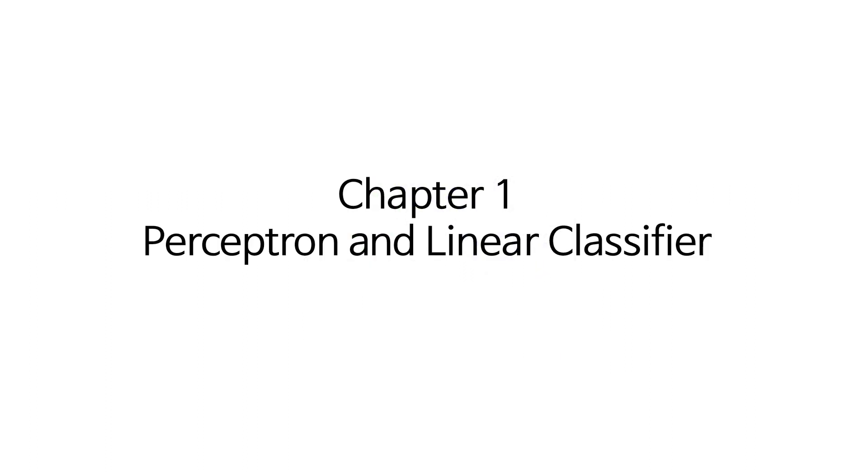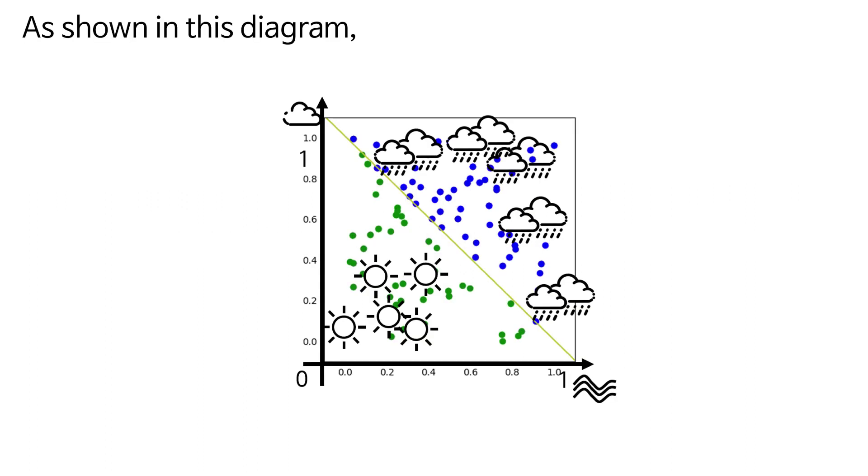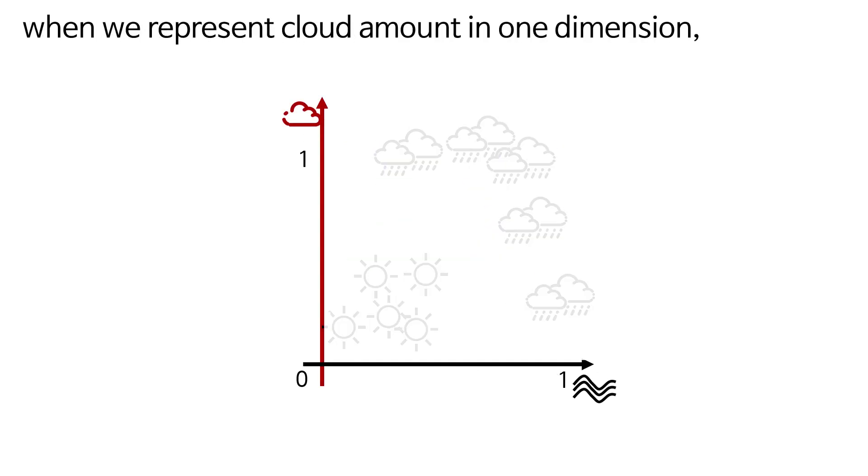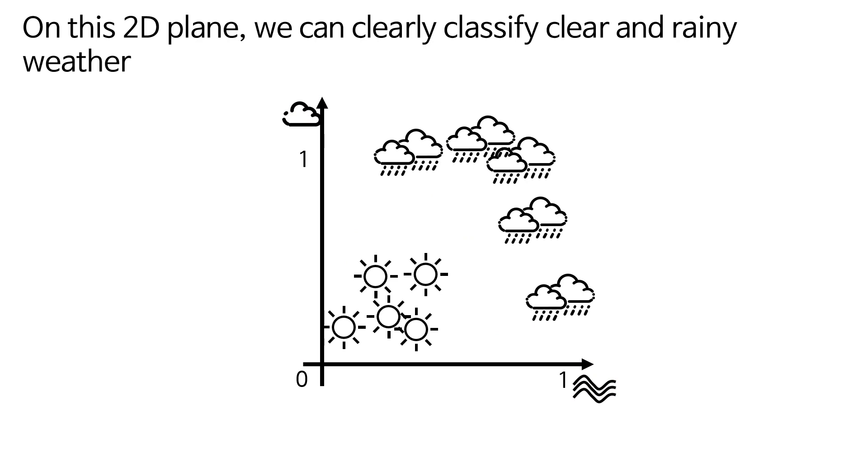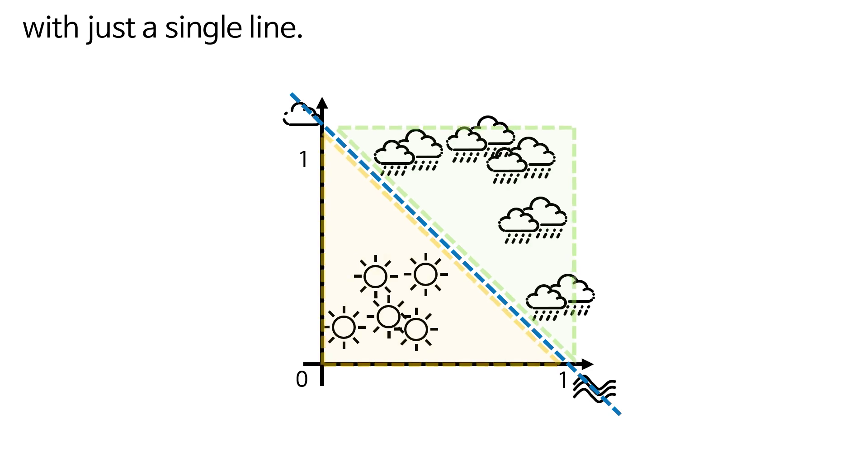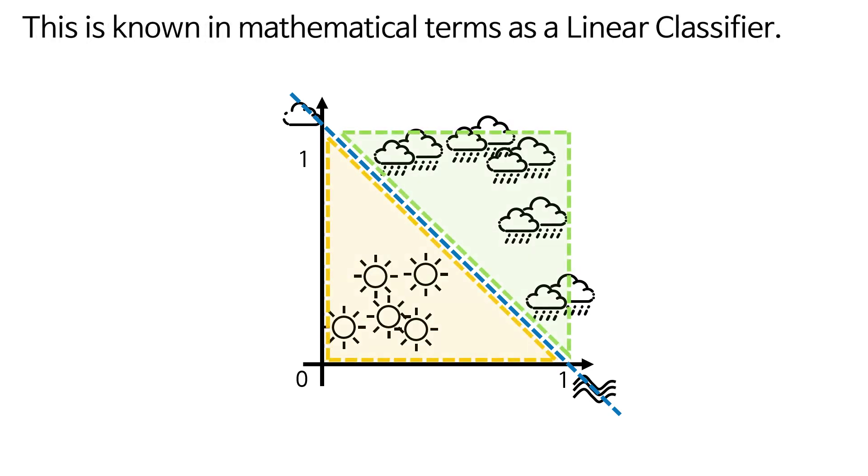Chapter 1: Perceptron and Linear Classifier. As shown in this diagram, when we represent cloud amount in one dimension and wind strength in another, we can form a 2D plane with clouds and wind. On this 2D plane, we can clearly classify clear and rainy weather with just a single line. This is known in mathematical terms as a linear classifier.